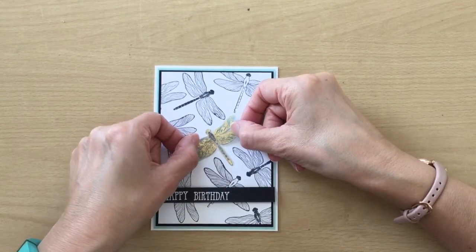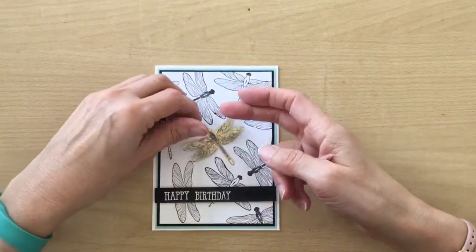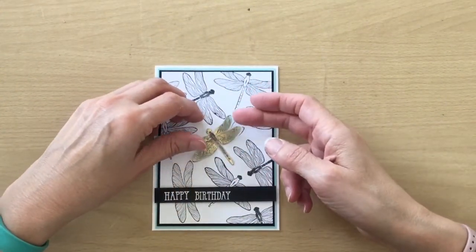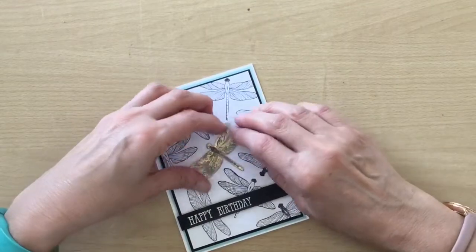And then I'm going to put my dragonfly on the first dragonfly that we stamped, sort of in the center of the card. So just the body goes on there and you've still got your wings you can flap around. You could actually color this one in as well if you wanted to.